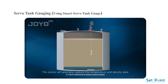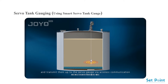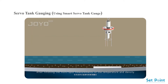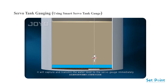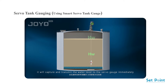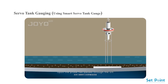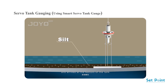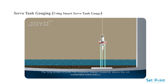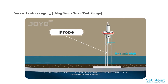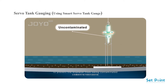The sensor precisely captures temperature and density data and transmits them to the servo gauge via wireless communication. After finishing the multi-spot measurements, the displacer keeps going down. When the water probe contacts the oil-water interface, it captures and transmits the water level to the servo gauge immediately. Once the probe has passed through the silt and arrived at the bottom of the tank, the actual height of the tank is generated. The long probe ensures the displacer always suspends above the silt to prevent contamination.